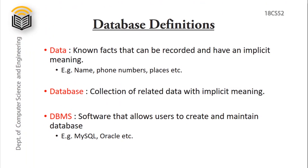Database definition. Data is nothing but unknown facts which can be recorded and also have an implicit meaning. For example, considering a student where his name, address, phone number etc. are called as data.